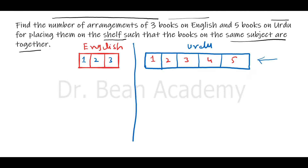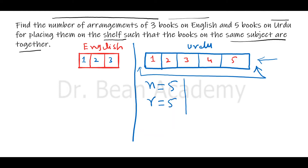In such problems, it's easy to calculate all the number of permutations you can make with these books separately. I have five Urdu books and I have to calculate with n equal to 5, and of course r is also 5 because I will use all the books. So it's nPr — 5P5.